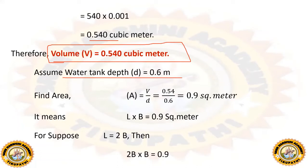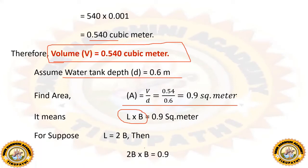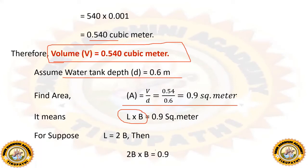The area and volume relation is: Volume equals Area multiplied by Depth. From that, we calculate the area, which becomes 0.9 square meters. Since it is a rectangular tank, the area equals Length multiplied by Breadth. We assume Length equals 2 multiplied by Breadth.